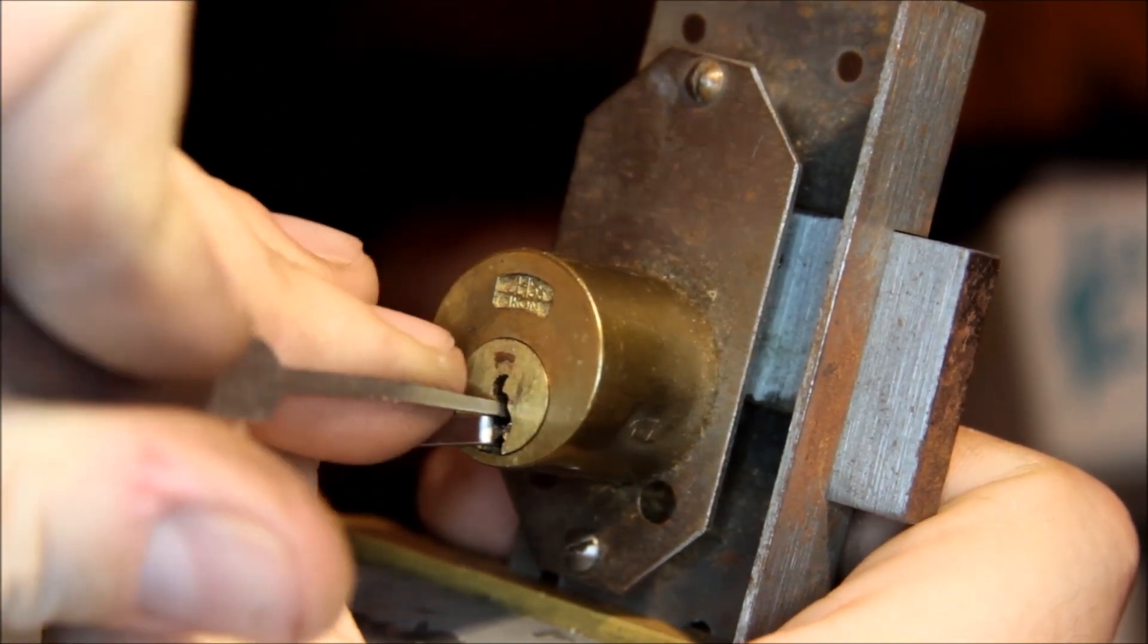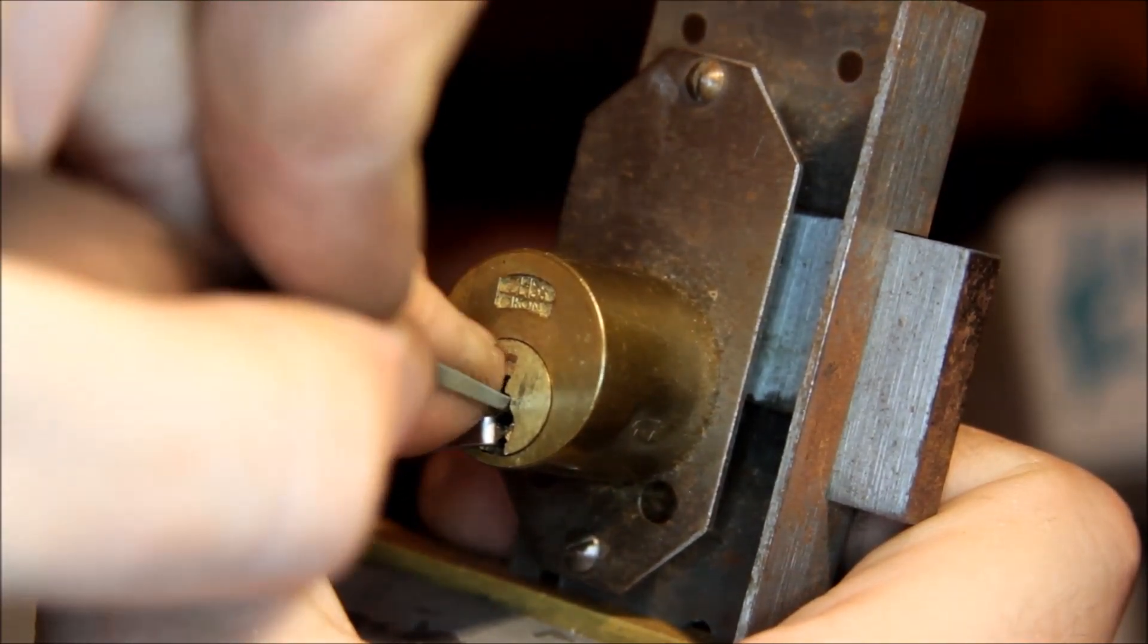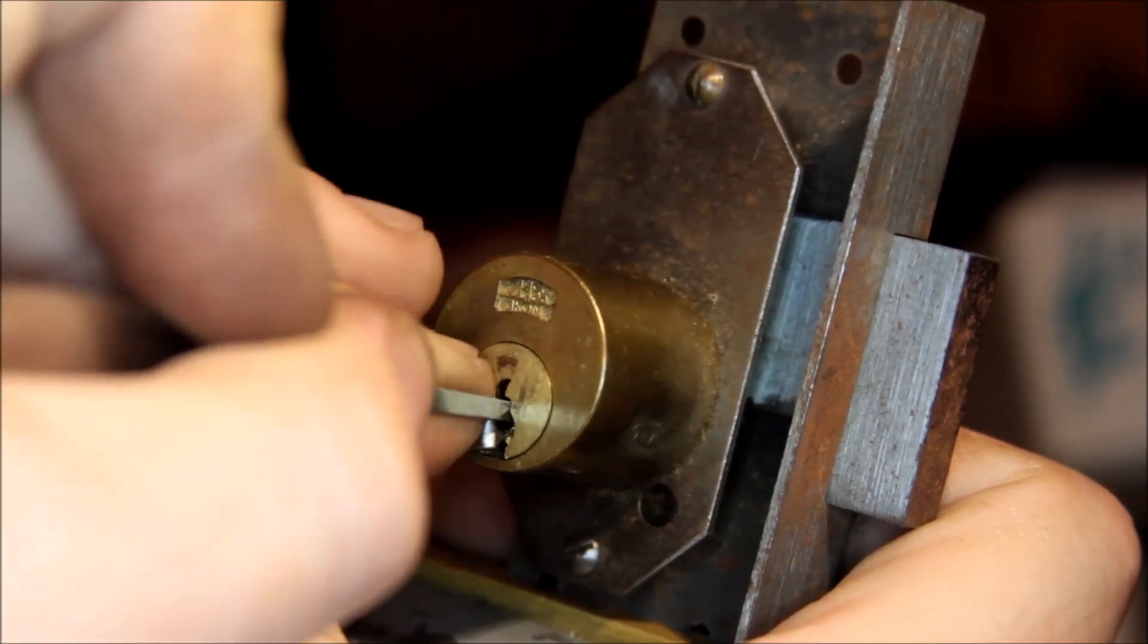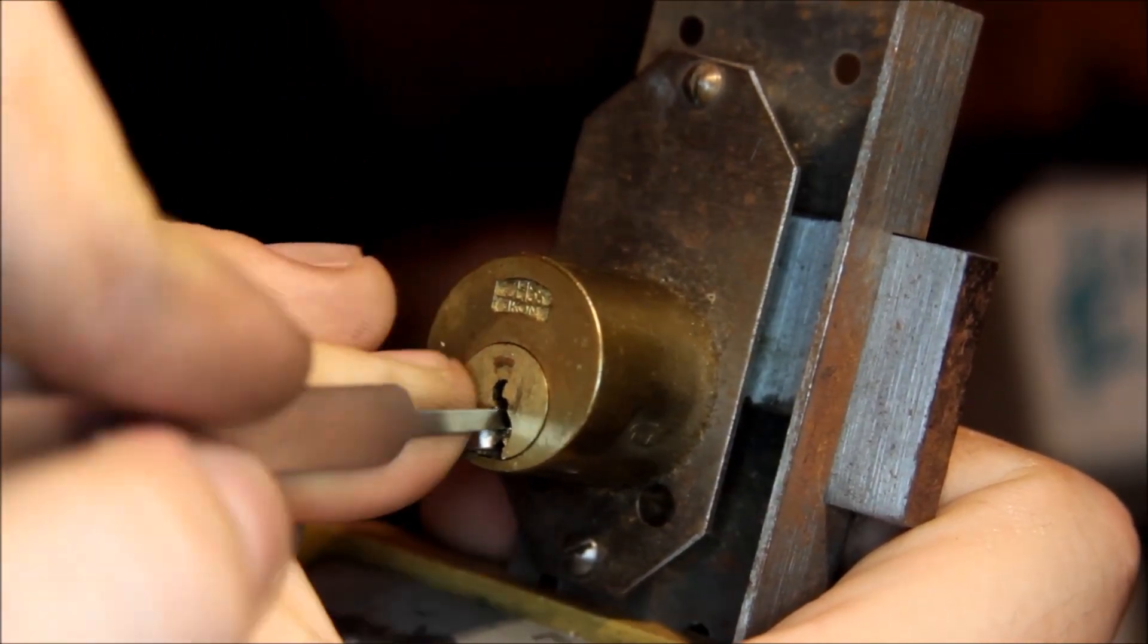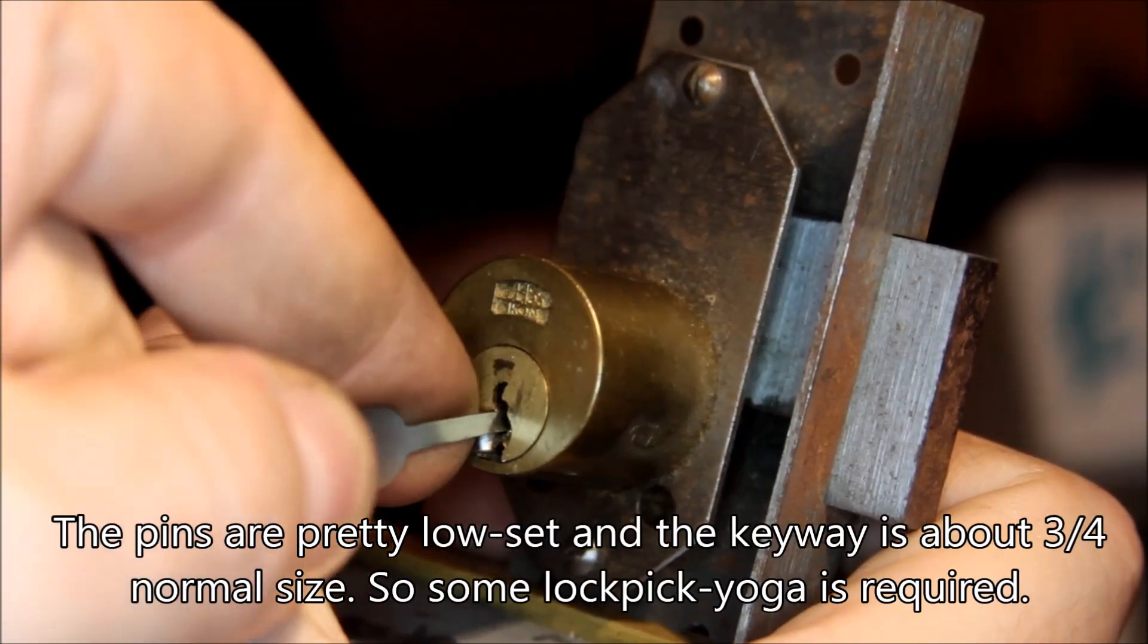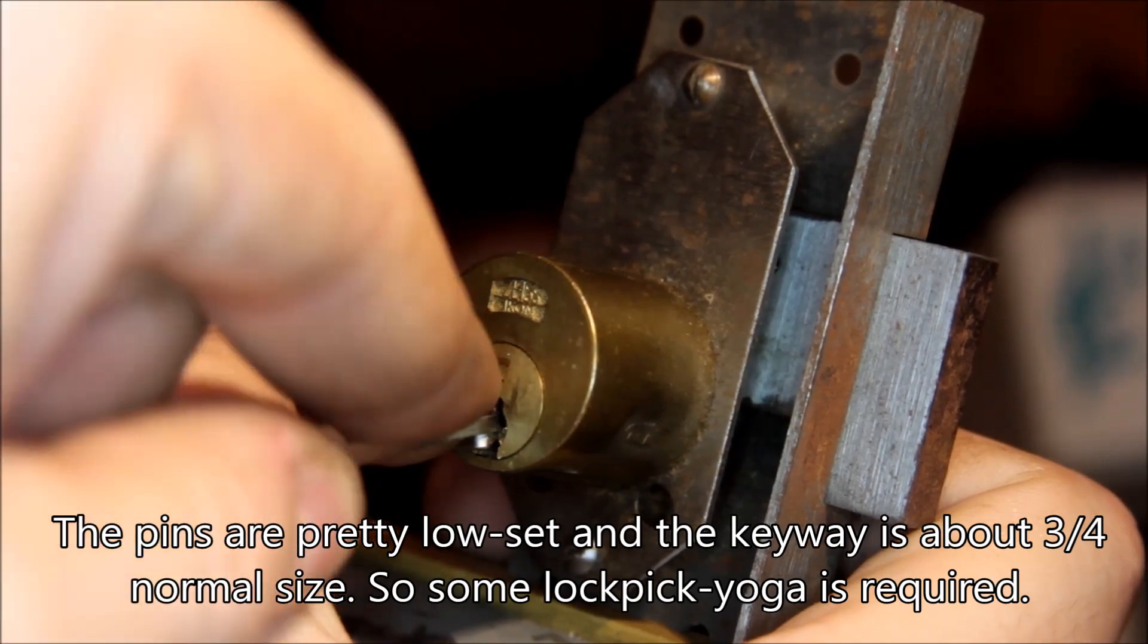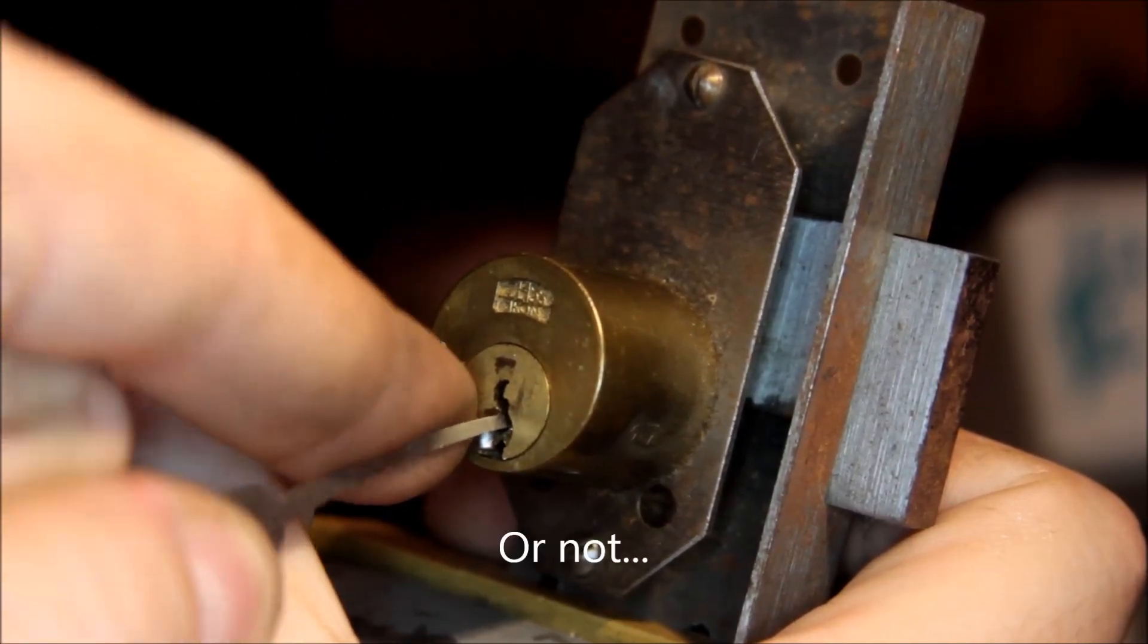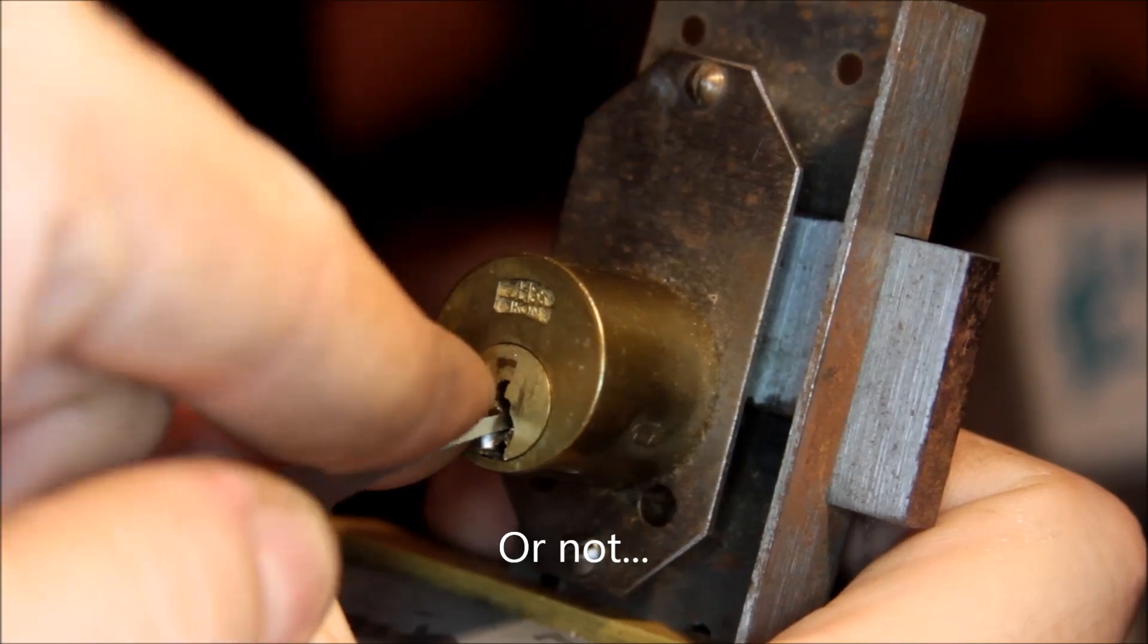So, let's do it the old-fashioned way. Okay, that would be the back of the keyway, which means we're out of pins. There's some crunchy shit in here.